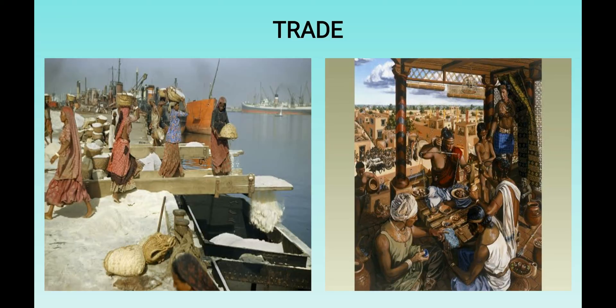The Harappans exchanged goods through a barter system. In exchange for finished goods, they probably acquired metals and food grains from neighboring villages. The Harappans also traded with the Mesopotamian civilization.